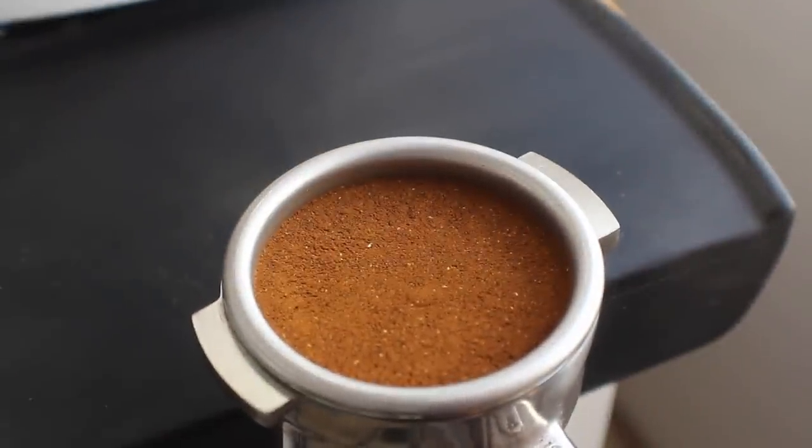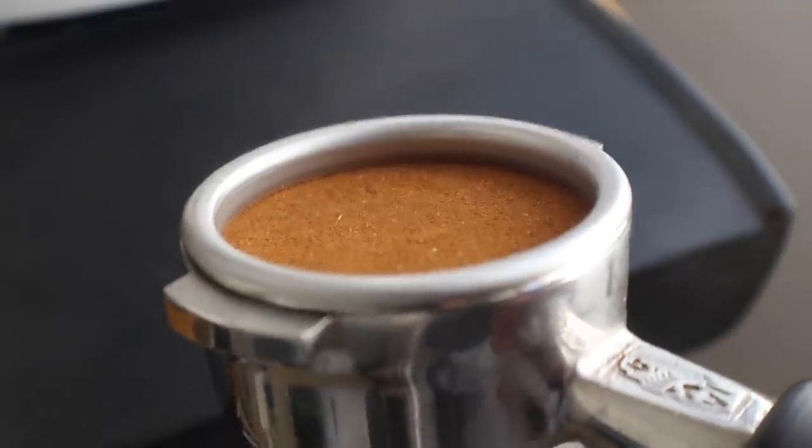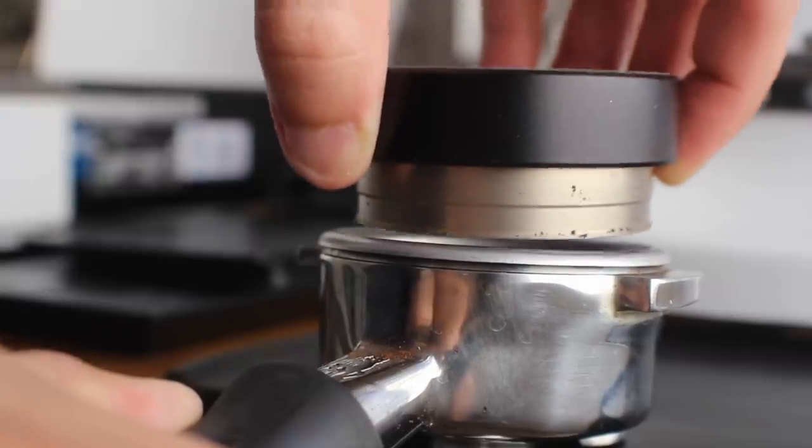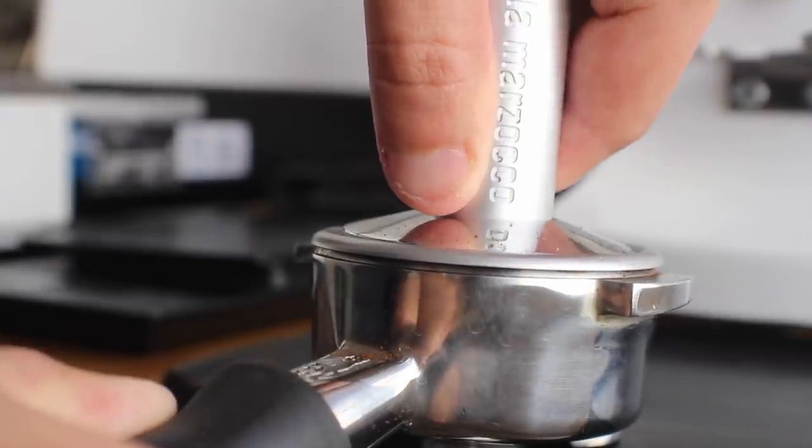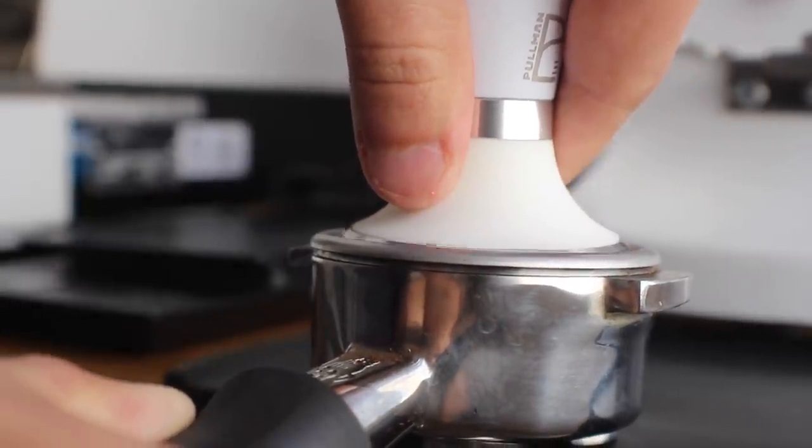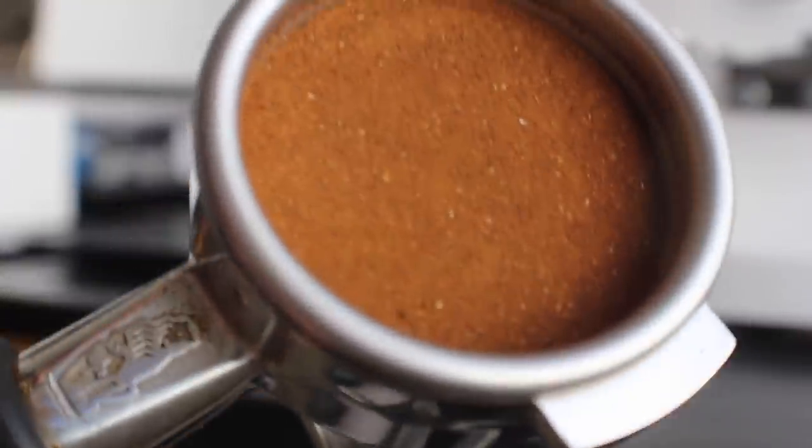Speaking of tamping, let's talk about the next piece: a comfortable tamper. Everyone's got a tamper if they have an espresso machine. Otherwise, you wouldn't be able to use it. They come in so many different shapes and sizes, but the one thing that I find most important is that it's comfortable, it fits in your hand, and you can use it consistently.